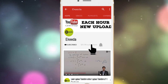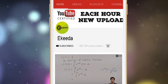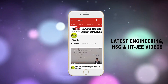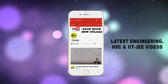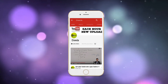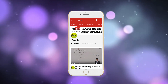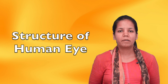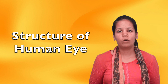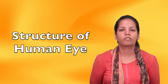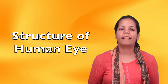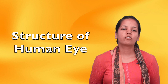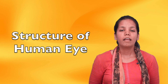Do subscribe to Ikeda channel and press the bell icon to get updates about latest engineering, HSE and IIT JEE Mains and Advanced videos. Hello students, today we are studying chapter Control and Coordination, and in that we are studying the topic: Structure of the Human Eye.